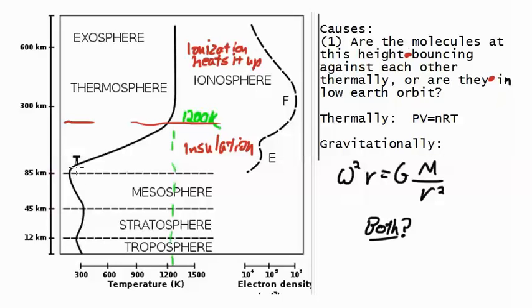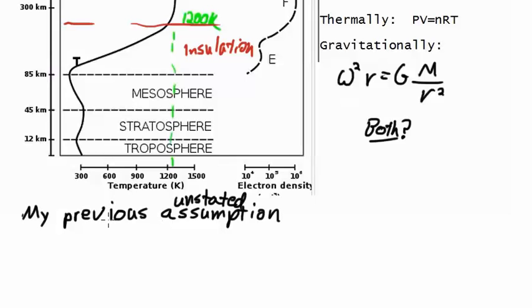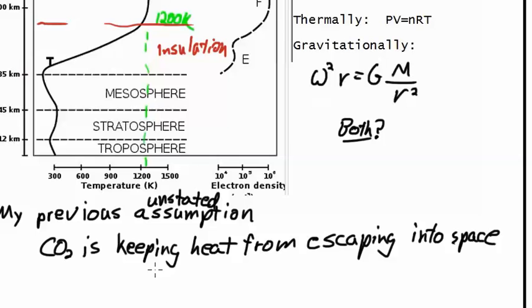The first possibility is bouncing against each other thermally, and the second one is in low Earth orbit. And of course the third very obvious possibility is that there's ionization going on here, which heats it. And then this region here is a layer of insulation, which prevents the heat from getting into here.